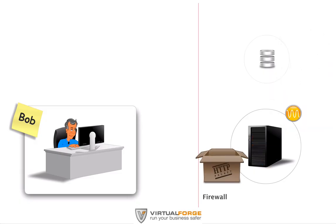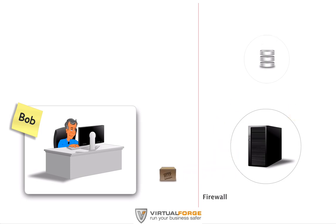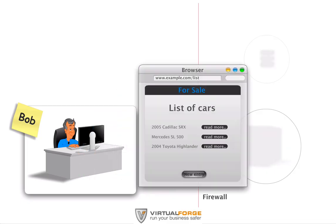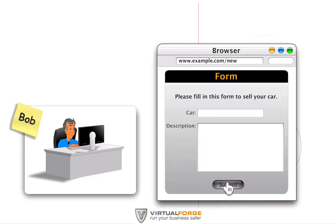This application has two use cases. Bob here wants to sell a car. He will demonstrate use case 1. He sends a request to the server to start the application and receives a list of offers already stored in the database. Since Bob wants to sell his car, he doesn't look at the other entries, but enters his description and submits it to the server.